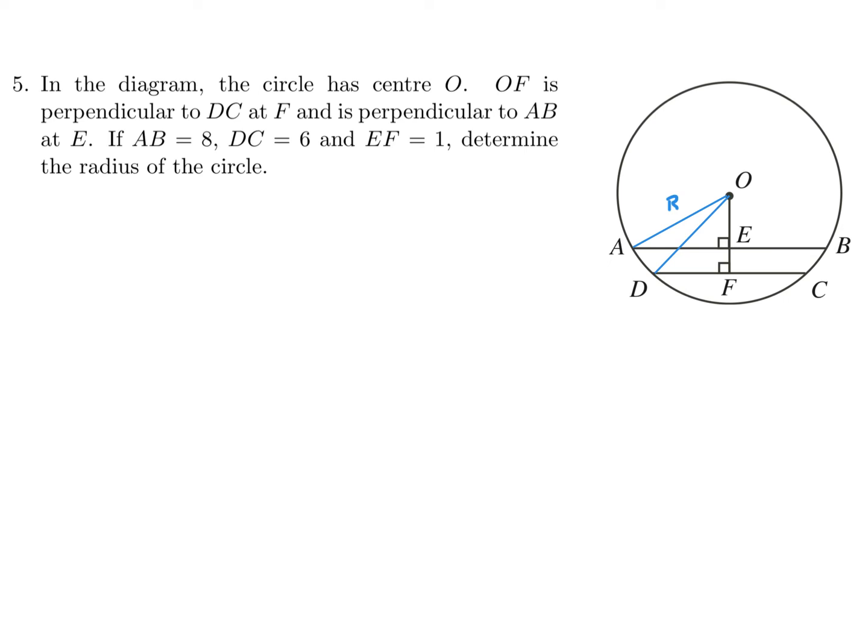And then let's see here. The AB segment is 8, right? So that means AE is 4. So, let's just squeeze in the 4 there. DC is 6, so that means DF is 3. Since the line that is coming from O to E and F is perpendicular, it'll chop those two chords in half. And then EF is 1, okay? And then OE, I'll just call X for now.